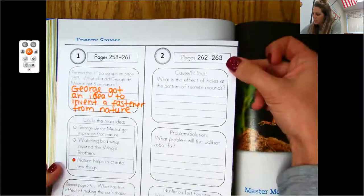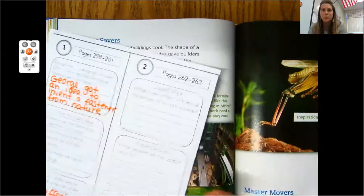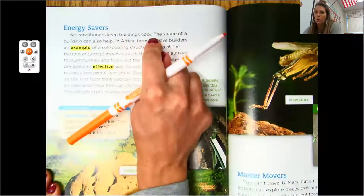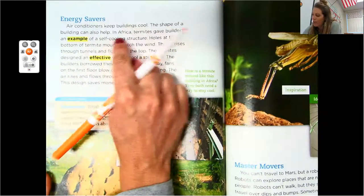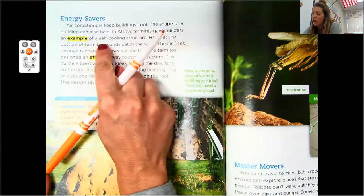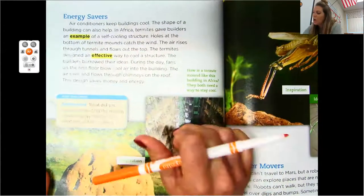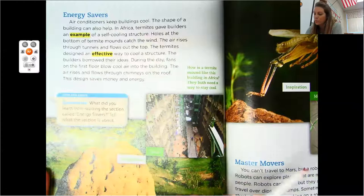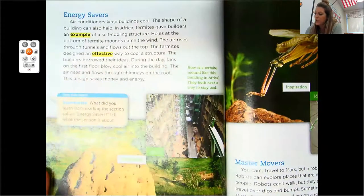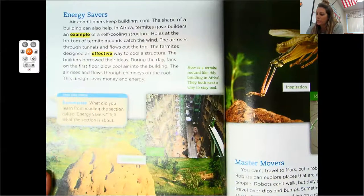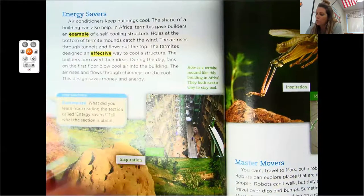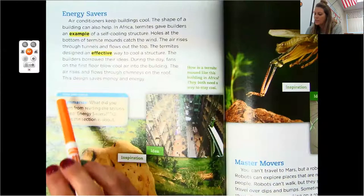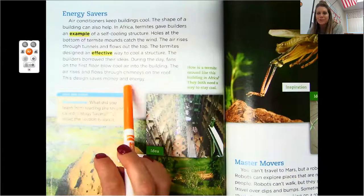So on, let's see here, where they want us to think about cause and effect and problem and solution on this too. So we'll read it and then we'll go back. Air conditioners keep buildings cool. The shape of a building can also help. In Africa, termites gave builders an example of a self-cooling structure. Holes at the bottom of termite mounds catch the wind. The air rises through the tunnels and flows out the top. The termites designed an effective way to cool a structure. The builders borrowed their ideas during the day. Fans on the first floor blow cool air into the building. The air rises and flows through chimneys on the roof. This design saves money and energy.